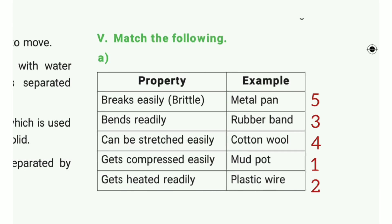Match the following. Section A: breaks easily — the answer is mud part. Bends freely — the answer is plastic wire. Can be stretched easily — the answer is rubber band. Can be compressed easily — the answer is cotton wool. Conducts heat readily — the answer is metal pan.